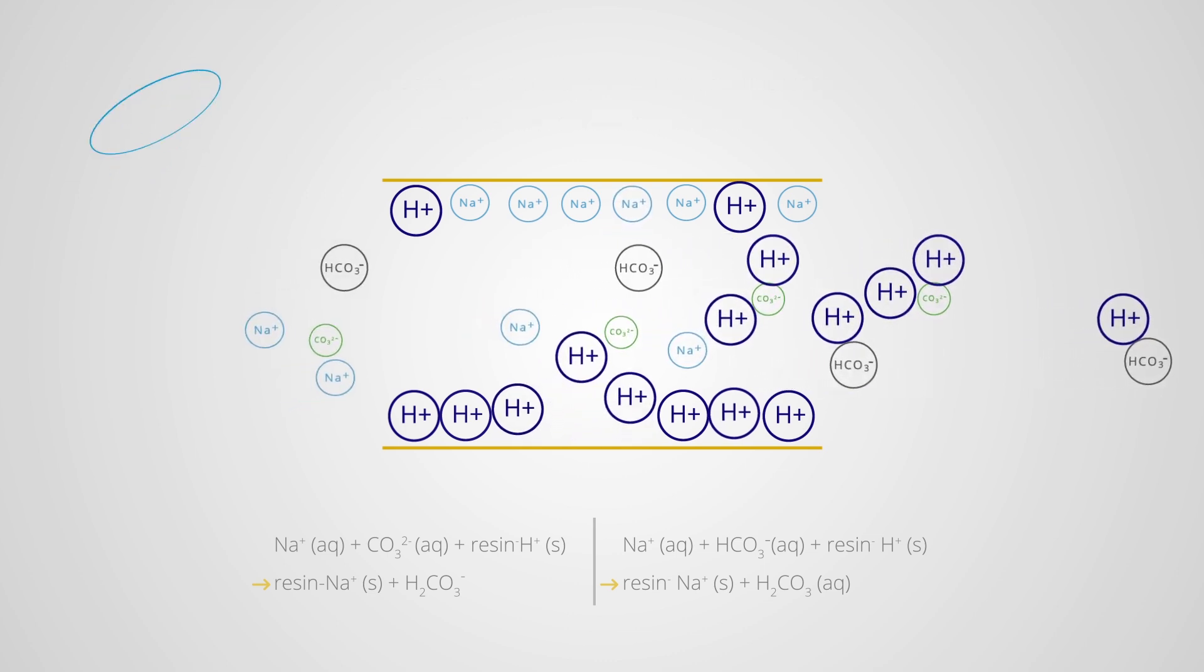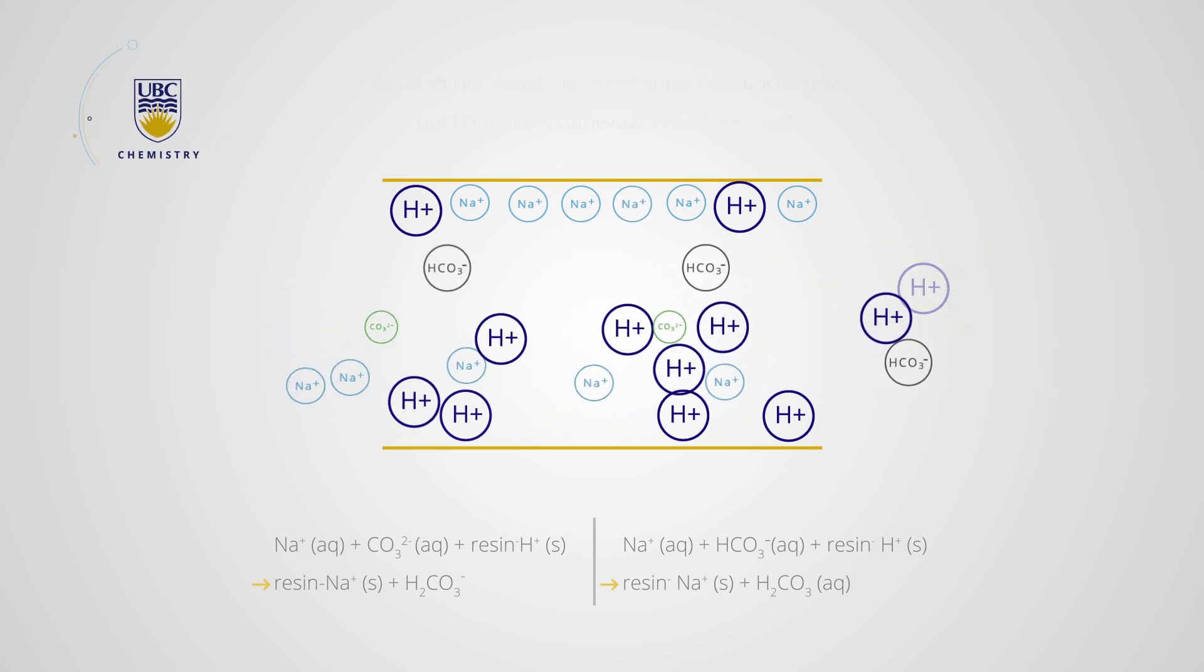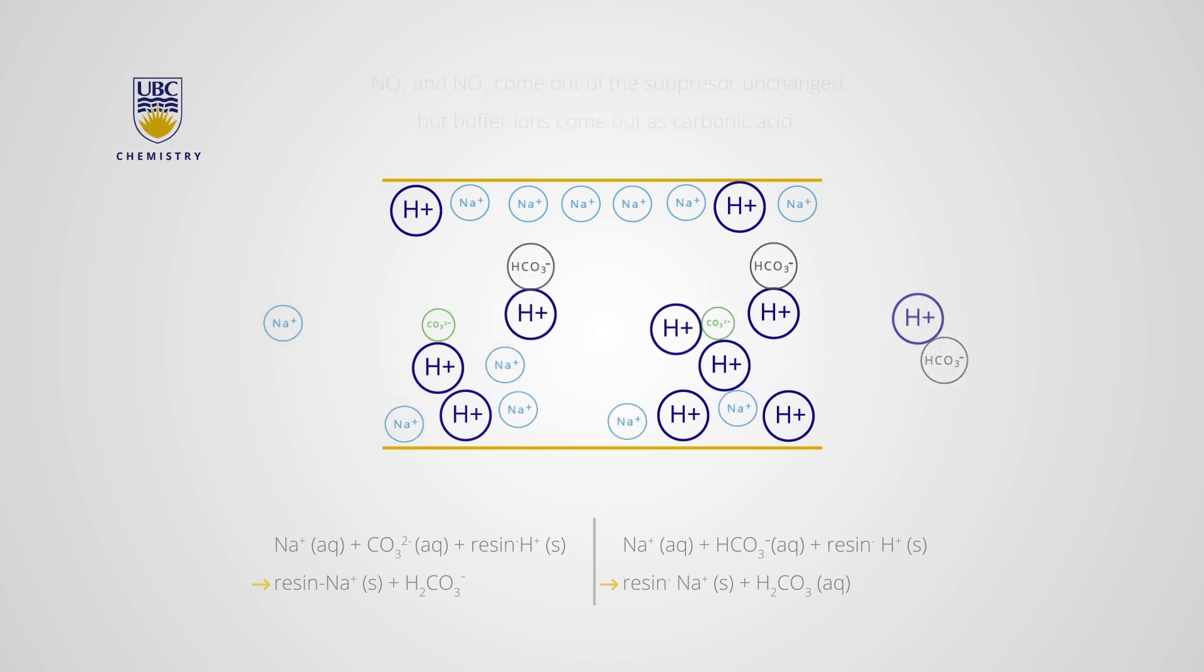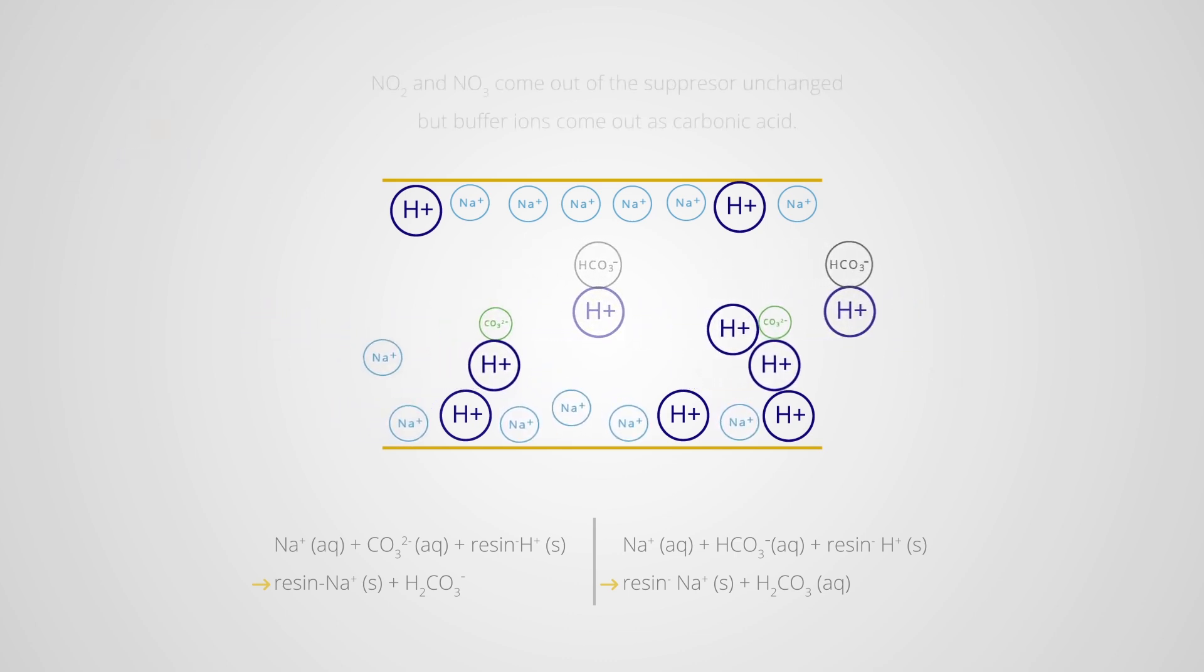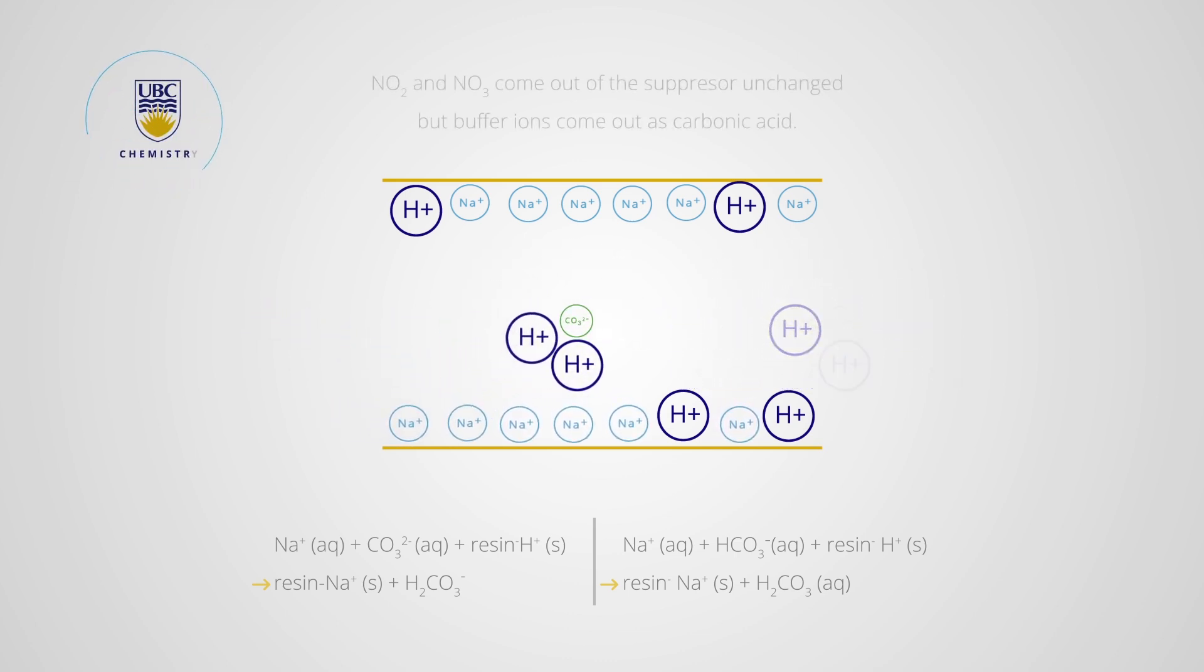The conversion of the bicarbonate and carbonate anions into carbonic acid solves the high background conductivity problem since the process produces a weak electrolyte of low conductivity. Thus, using a suppressor increases the analyte signal-to-noise ratio and decreases the background signal.